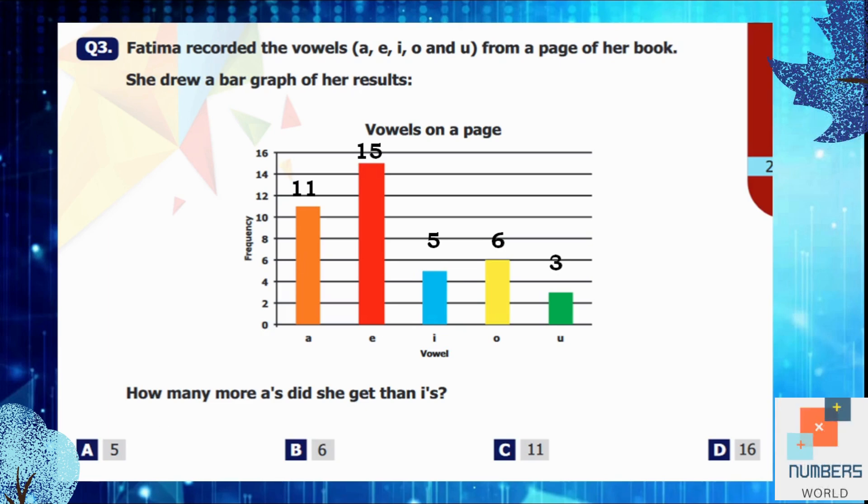It's a question of comparison: how many more A's did she get than I's? Whenever a question of comparison comes, we subtract the numbers. For A, the number is 11. And for I, the number is 5. So we will subtract these two numbers. So 11 minus 5 is equal to 6. So B is our answer.